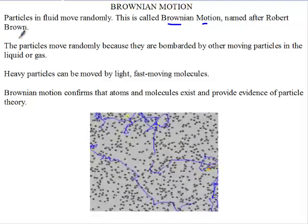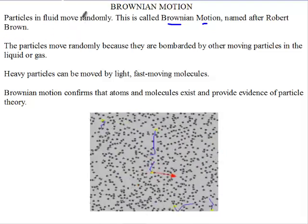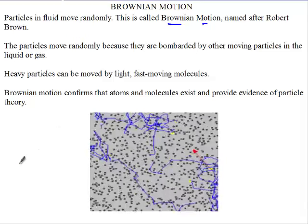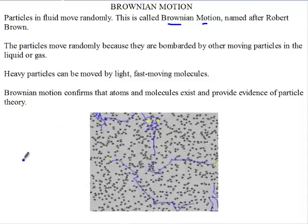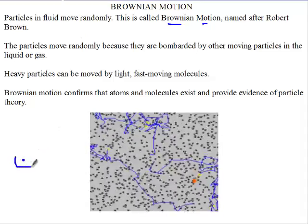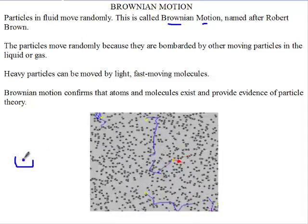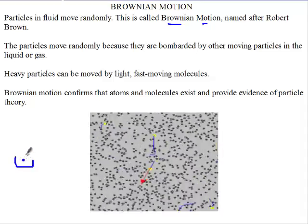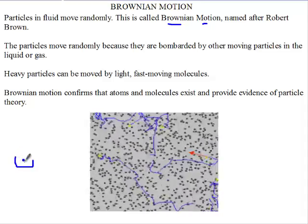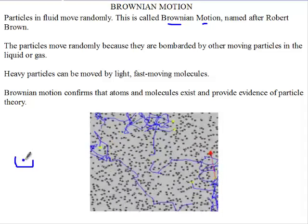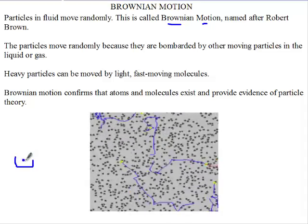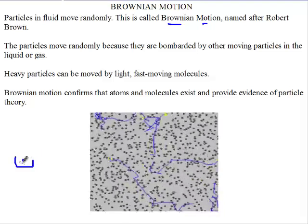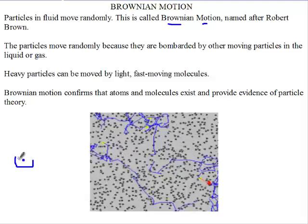Let me give you a brief history. Robert Brown observed this but couldn't really explain it. He observed that when specks of pollen fell in water, the pollen did not move in a specific direction but instead moved randomly. This was observed under a microscope.